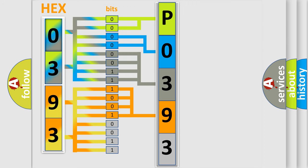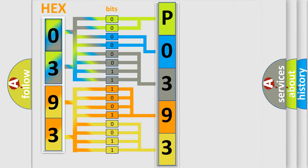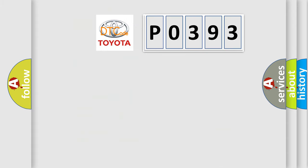A single byte conceals 256 possible combinations. We now know in what way the diagnostic tool translates the received information into a more comprehensible format. The number itself does not make sense if we cannot assign meaning to what it actually expresses. So, what does the diagnostic trouble code P0393 interpret specifically for Toyota car manufacturers?